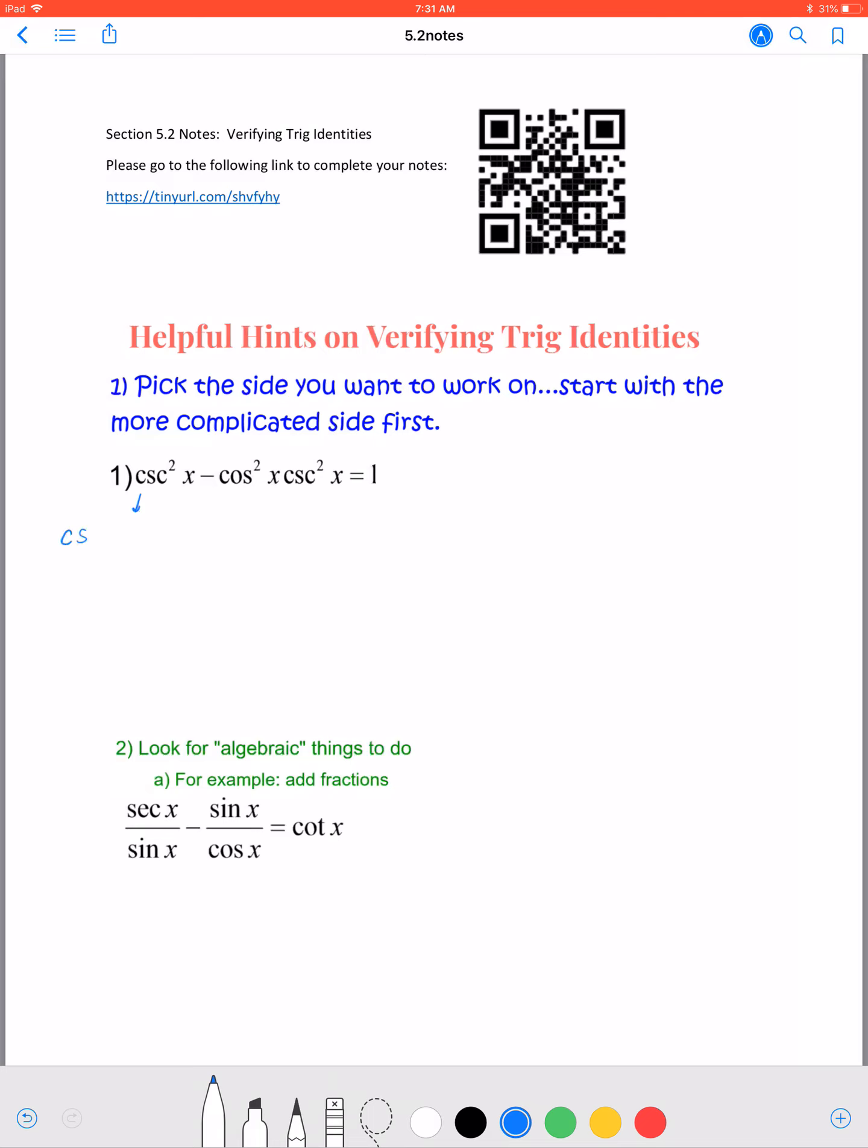I'm first going to factor out cosecant squared of x. So I'm left with 1 minus cosine squared of x equals 1.